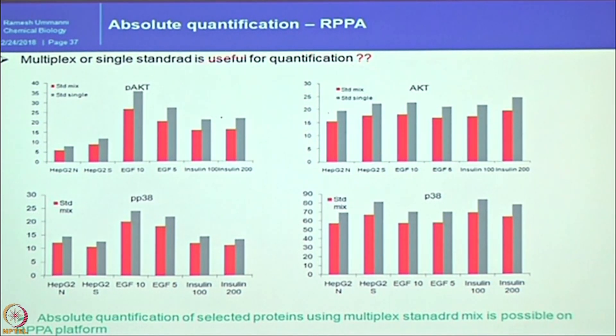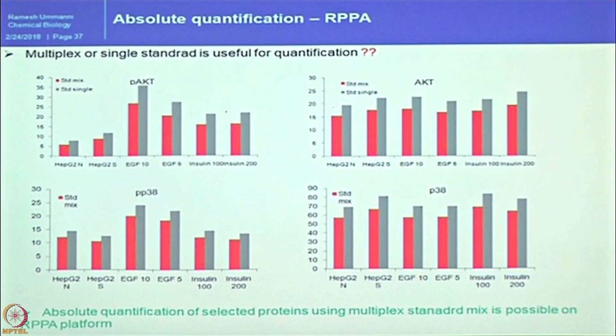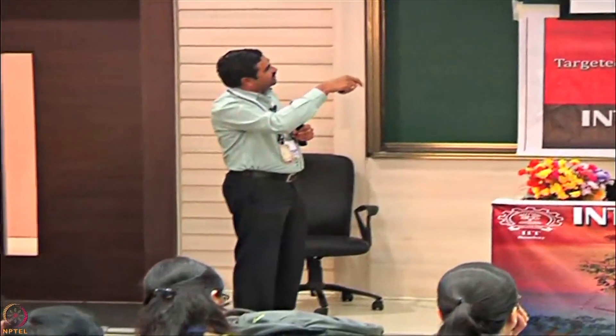Furthermore, absolute quantification can also be done in a multiplexing manner. We spotted proteins separately, then mixed all of them and spotted as single spots in a concentration-dependent manner to test whether single spotting or multiplexing is possible. The signal is slightly down, but the behavior is the same for all different proteins. This shows the power of RPPA — it can be used for absolute quantification of a particular protein of interest across a large number of samples.